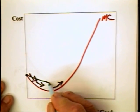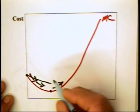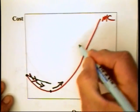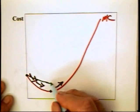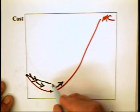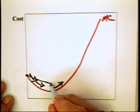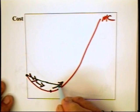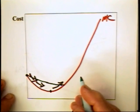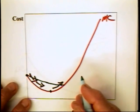Now when we get down to this point, you might think that the average variable cost curve will begin to move up. But no, so long as the marginal cost is below the average variable cost, the average variable cost must in fact be falling.